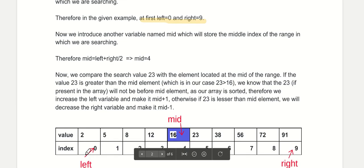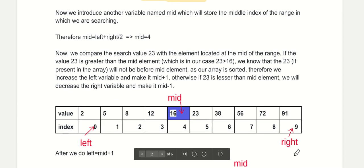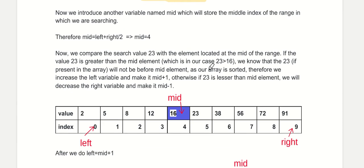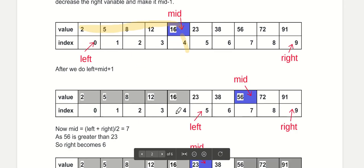Left points to the first element and right points to the last element. We now introduce another variable named mid, which stores the middle index of the range. Mid equals left plus right divided by 2, which is 4. At index 4 the element is 16. We compare the search value 23 with 16. Since 16 is less than 23, all elements to the left of 16 will also be less than 23 and are of no use, so we shift left from 0 to mid plus 1, that is 5.